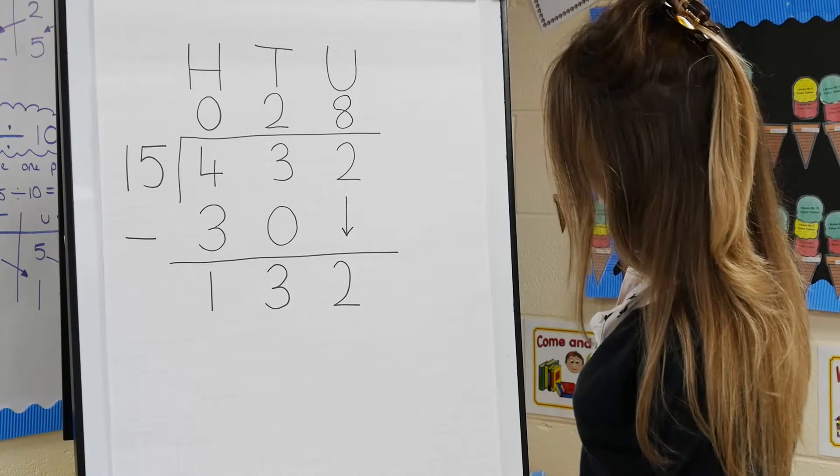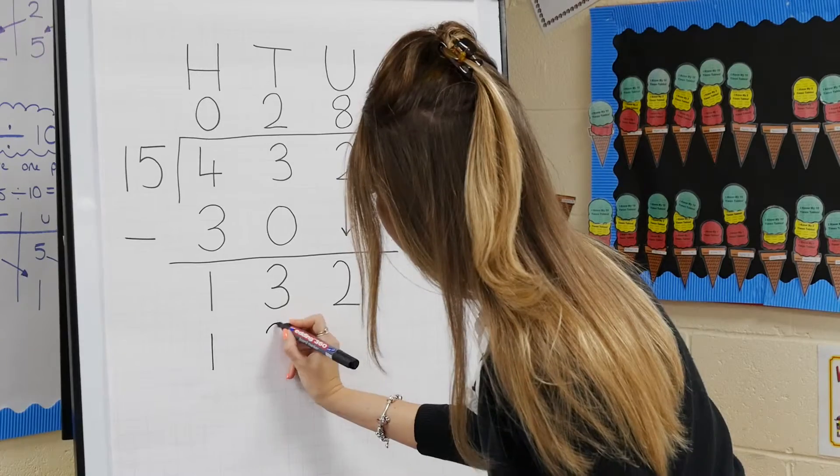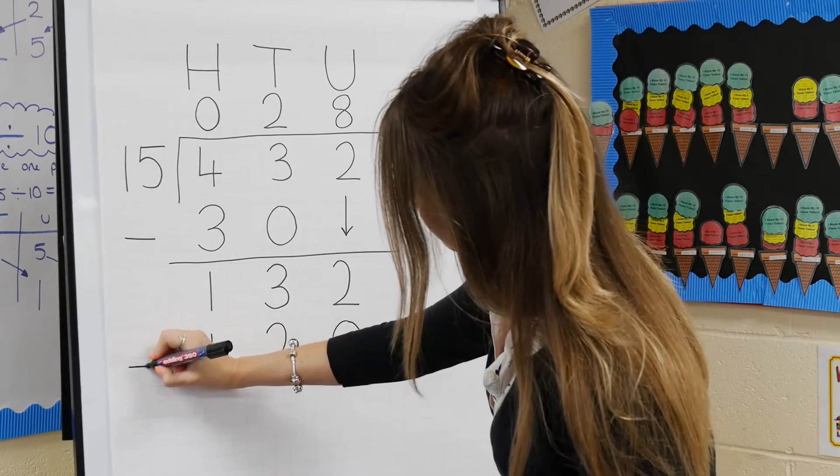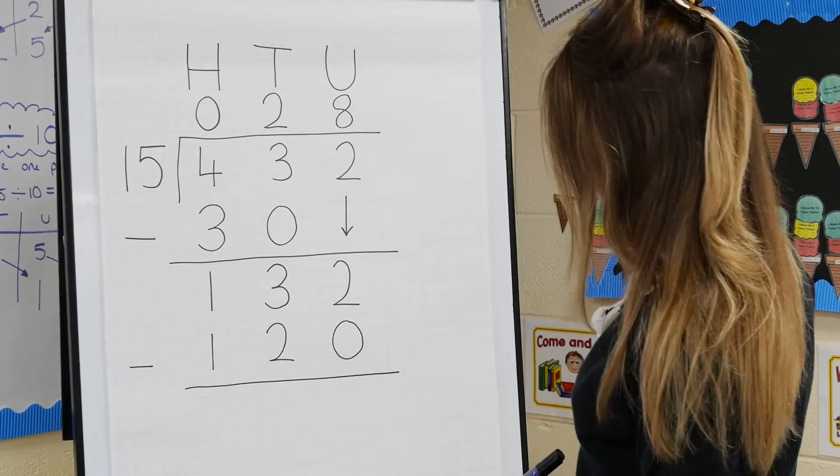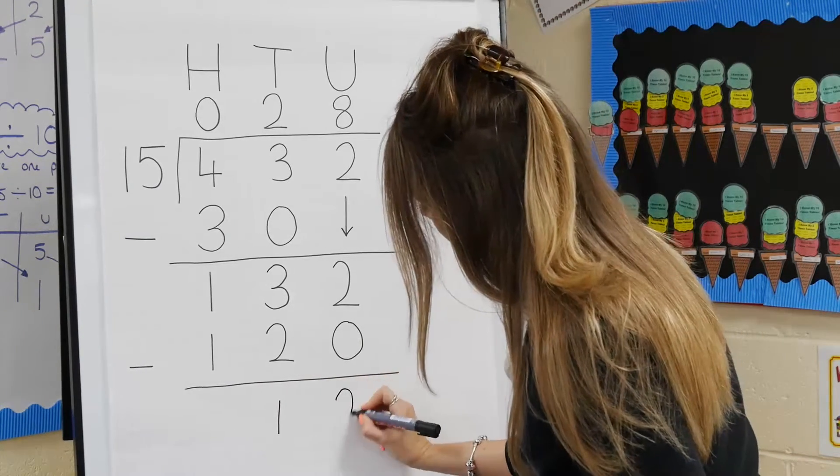So 8 lots of 15 makes 120. Now write 120 underneath 132. Then write a subtract sign to the left and draw a line underneath like this. Now subtract 120 from 132 to make a remainder of 12.